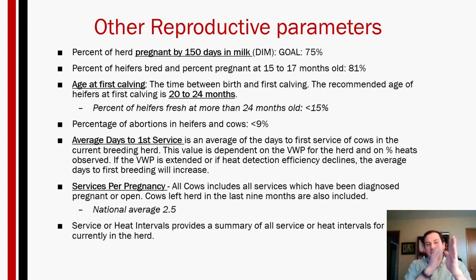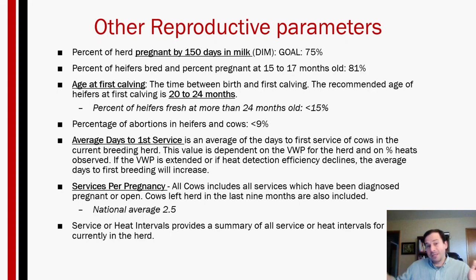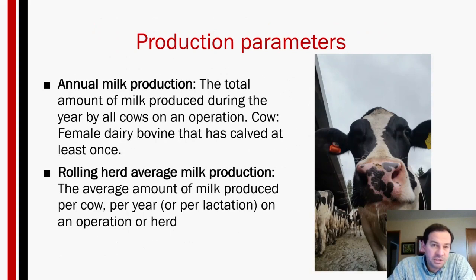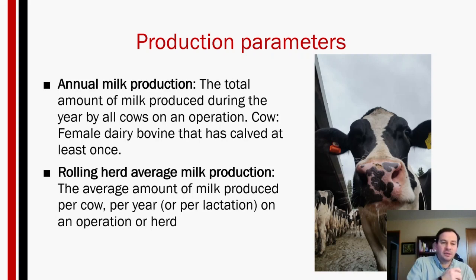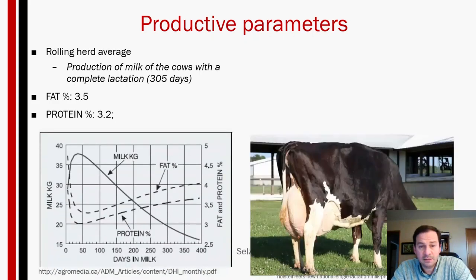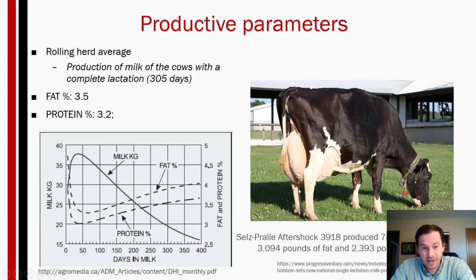Moving to production parameters: key metrics include annual milk production and rolling herd average — milk production standardized to 305 days — along with fat and protein content. The current world record holder produced about 78,000 pounds of milk, whereas the current national average is 20,000–25,000 pounds per cow.